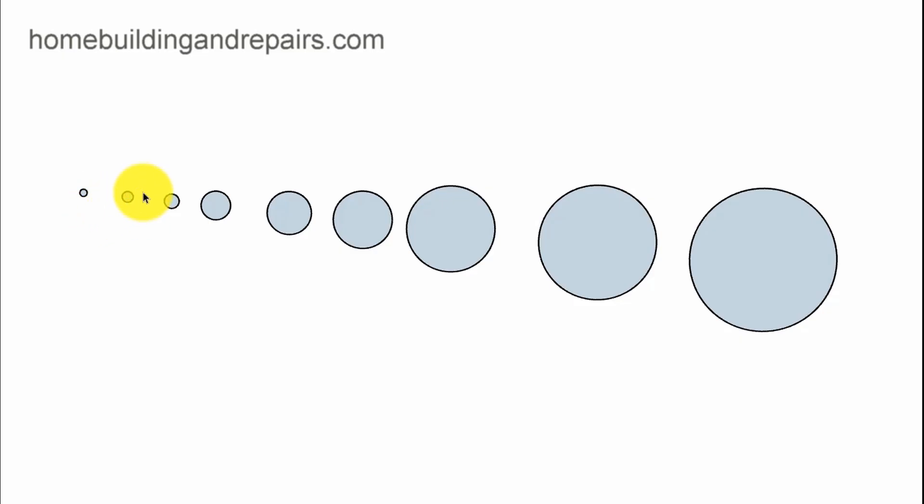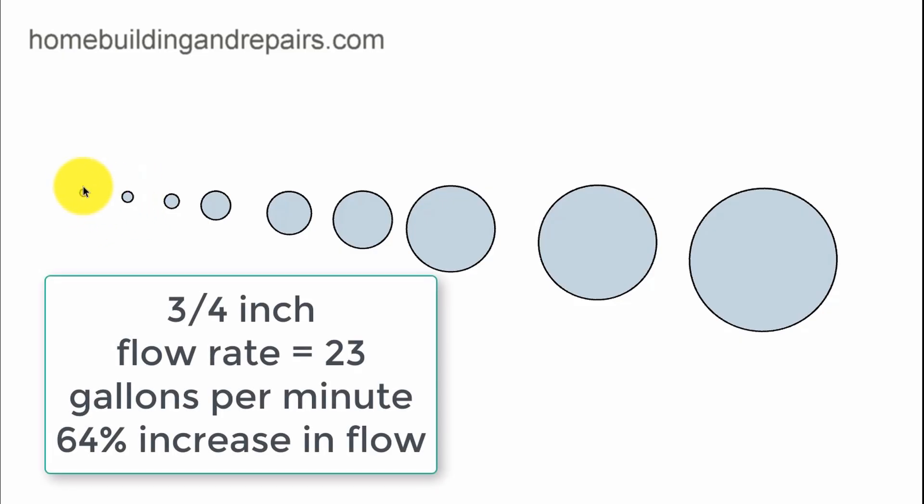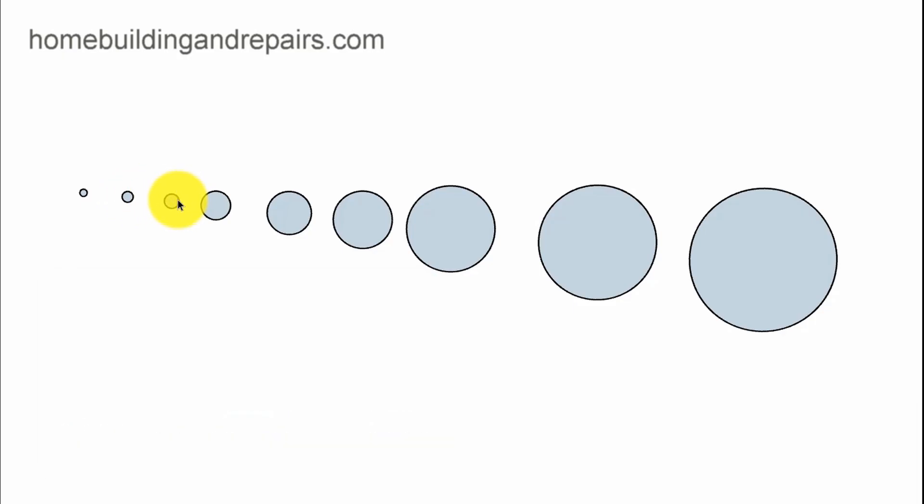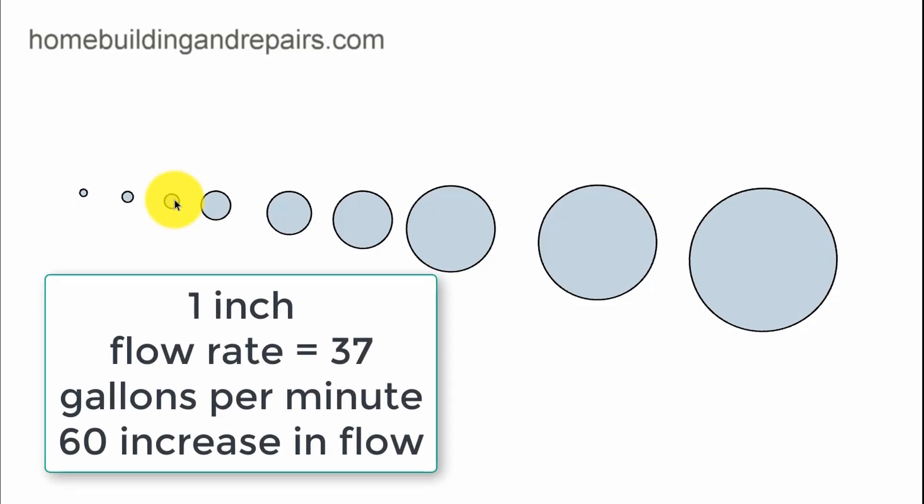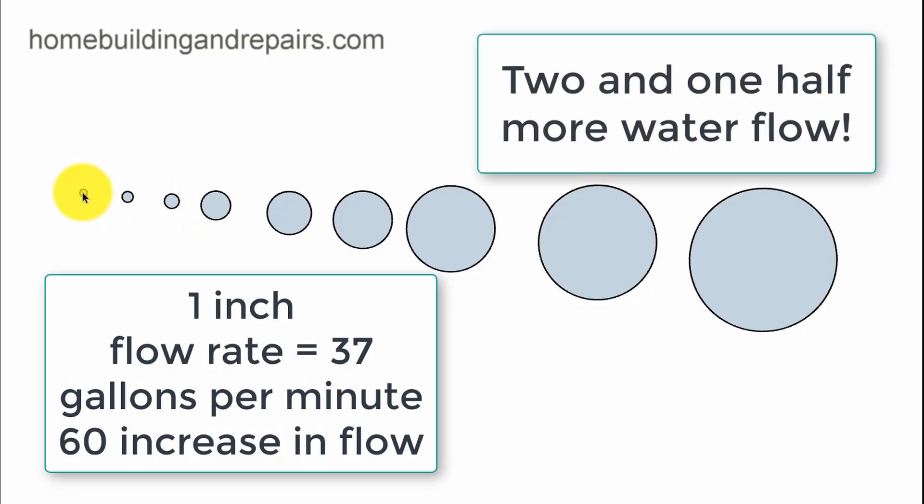Those are going to be in gallons per minute. A 1/2-inch pipe can fill up 14 gallons in a minute. That's how much water can run through this pipe at a specific PSI. A 3/4-inch pipe is 23 gallons. If you think about it, 28 gallons would be double, and we're only raising the diameter of the pipe by a quarter of an inch. When we go to a 1-inch pipe, we are now getting 37 gallons per minute, more than double the 1/2-inch pipe.